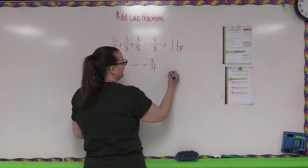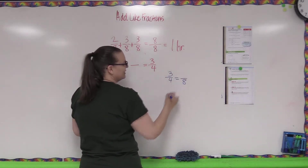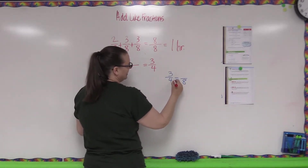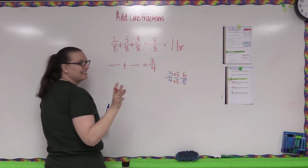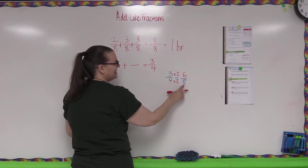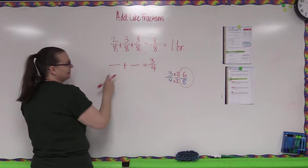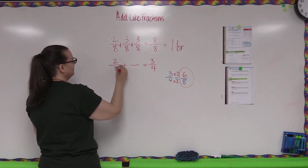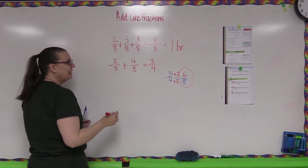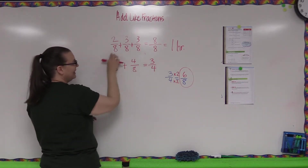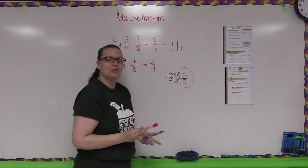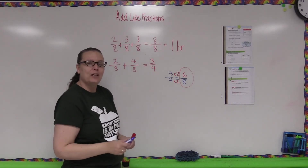Using equivalent fractions, let's convert three-fourths into eighths. What do you multiply four by to get eight? Multiply by two — do the same to the numerator: three times two is six. So three-fourths equals six-eighths. Now, how can we make six-eighths? How about two-eighths plus four-eighths? We know six-eighths equals three-fourths because they are equivalent fractions. I think you'll do great — if you need help, contact me at mvaw123@gmail.com.